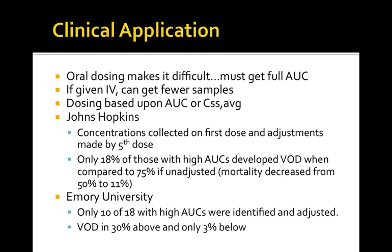At Emory University, only 10 of 18 patients with high AUC were identified and adjusted. Veno-occlusive disease occurred in 30% of those who remained above the target range, but in only 3% of those below. This shows that VOD is substantially minimized by keeping the AUC within the target range.